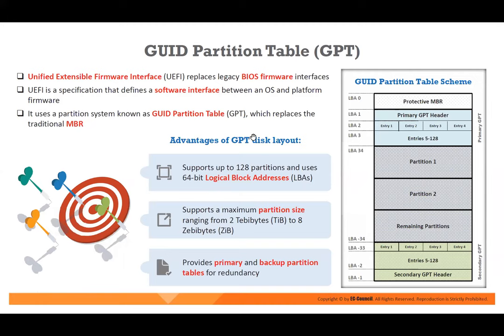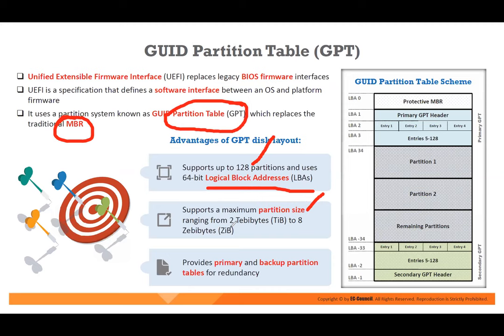GPT disk uses a partition system known as GUID Partition Table, which replaces the traditional MBR. GPT supports 128 partitions and uses 64-bit logical block addressing. Maximum partition size ranges from 2 zettabytes to 8 zettabytes. It provides primary and backup partition tables — so if one goes down, the other can help. These are the advantages of GPT.